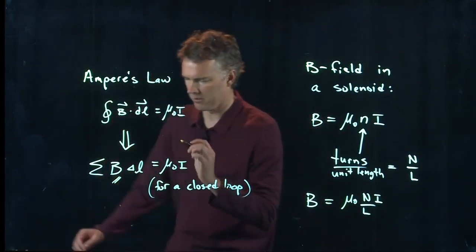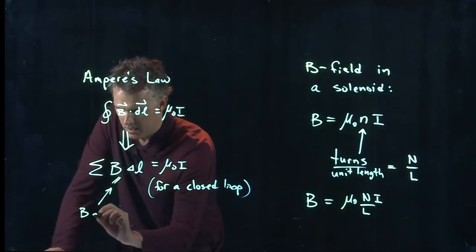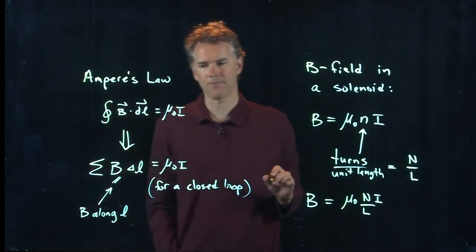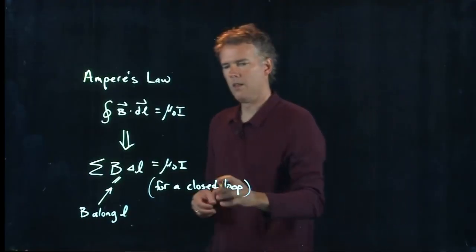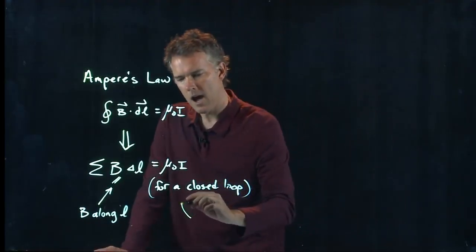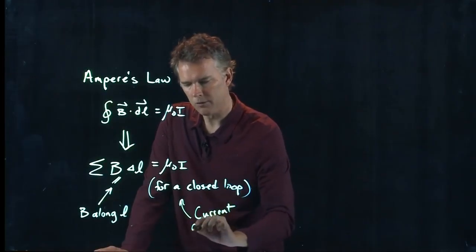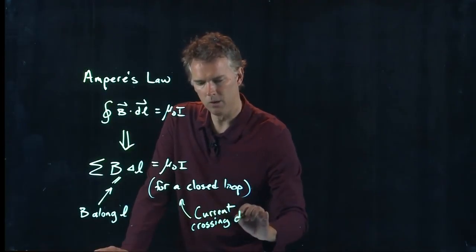Let me explain what this means. This parallel just means B along L. This side is how much current is crossing that closed loop.